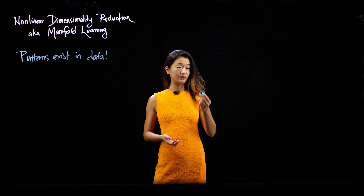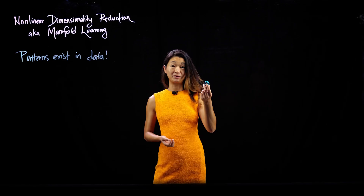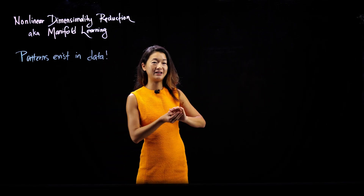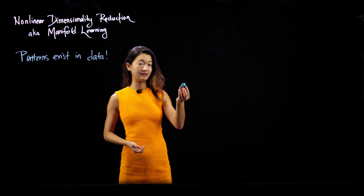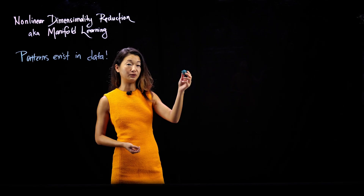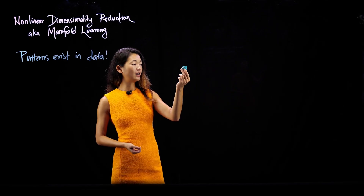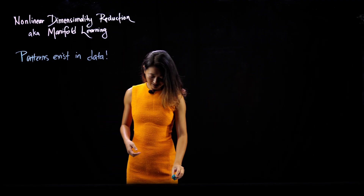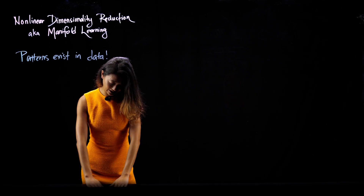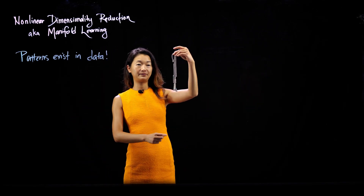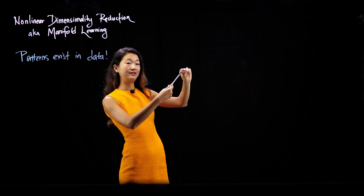I found these rare earth magnets in my office — it's one of my favorite office toys to play with — so I brought them as a prop to show you what kind of high-dimensional data might look like. Let's say your data is like this little ball of little magnets here, roughly smashed into a little ball. In order to describe all of the data points on this little ball, you kind of need all three dimensions because we exist in a three-dimensional world.